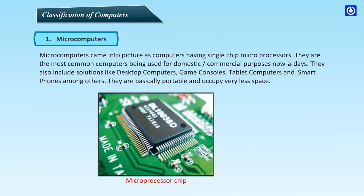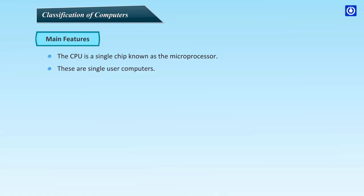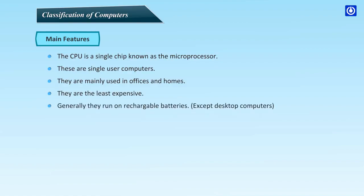Microcomputers are basically portable and occupy very little space. Main features: the CPU is a single chip known as the microprocessor. These are single-user computers, mainly used in offices and homes. They are the least expensive and generally run on rechargeable batteries, except desktop computers.